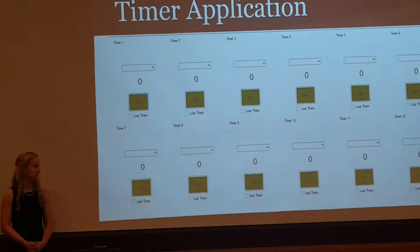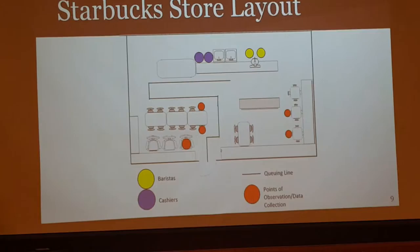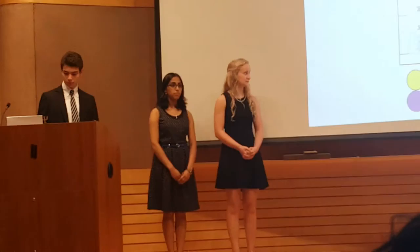This is a picture of the timer application that we used to record. This is the Starbucks store layout — this is how we observed the store to look when we visited. You can see in blue that there were generally two cashiers and in yellow typically two baristas, and the red circles are where we sat to observe the lines.